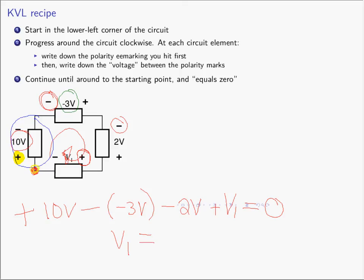So if we want to solve for V1, which is a voltage we don't know, we can simply rearrange this equation. We have 10 minus a minus 3 — which is plus 3 — that's 13, minus 2, which is 11, carried to the other side. We see that V1 is negative 11 volts. So for KVL, I always do it the same way every time. I always begin in the lower left part of the circuit, go around the circuit clockwise, write down the polarity marking you hit first, then write down the actual voltage between those polarity markings. Keep doing this until you get back to the starting point, and when you do, that must equal zero.